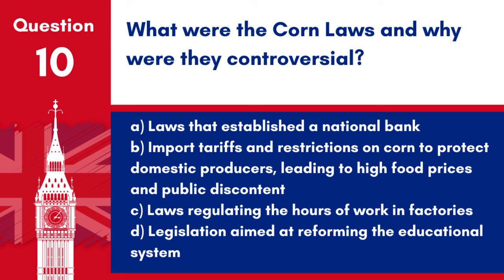Question 10: What were the Corn Laws and why were they controversial? a. Laws that established a national bank. b. Import tariffs and restrictions on corn to protect domestic producers, leading to high food prices and public discontent. c. Laws regulating the hours of work in factories. d. Legislation aimed at reforming the educational system. Answer: b. Import tariffs and restrictions on corn to protect domestic producers, leading to high food prices and public discontent. The Corn Laws were highly controversial because they kept food prices high, benefiting landowners at the expense of the general population, leading to widespread protest.